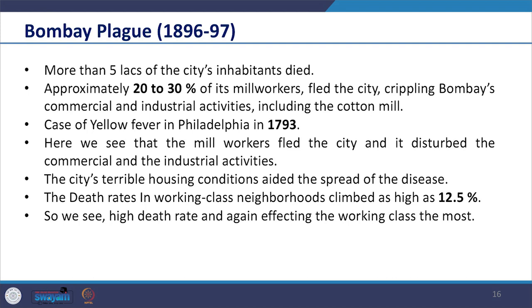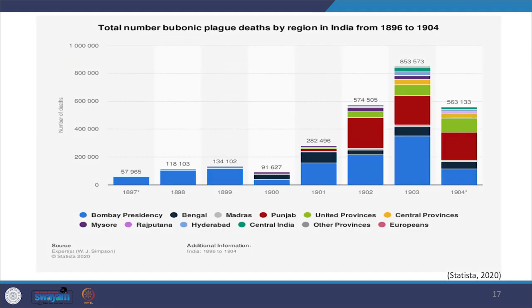More than 5 lakhs of the city's inhabitants, including approximately 20 to 30 percent of its mill workers, fled the city, crippling Bombay's commercial and industrial activities including the cotton mill. We may recollect that in the case of yellow fever in Philadelphia in 1793 the well-to-do left at the first threat. Here we see that the mill workers fled the city, disturbing commercial and industrial activities. The death rate in working class neighbourhoods climbed as high as 12.5 percent.